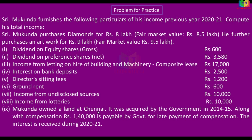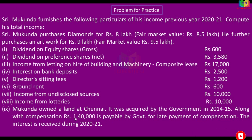Mookunt owned land at Chennai. It was acquired by the government in 2014-15, along with compensation of Rs. 1,40,000. Interest is payable by the government for late payment of compensation. On interest received on compensation, we have to claim a 50% deduction, and the balance is taxable.